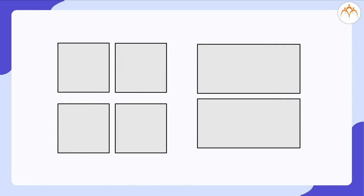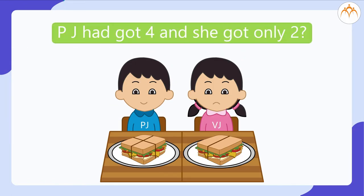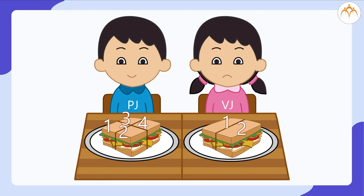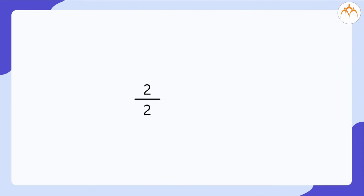So now what do you think? Has PJ got more sandwiches? Right! Both of them have got one sandwich. Then why did the girl feel that PJ had got four and she got only two? Because she compared by the number of pieces. If she had looked at the total stuff of the sandwich, she got two out of two, that is 2 ÷ 2 = 1, whereas PJ got four out of four, that is 4 ÷ 4 = 1. Both of them got equal amounts. So now we can say that 2 ÷ 2 is equal to 4 ÷ 4.